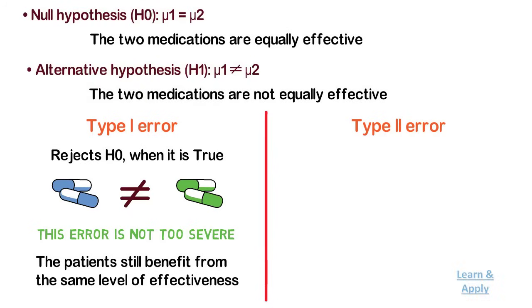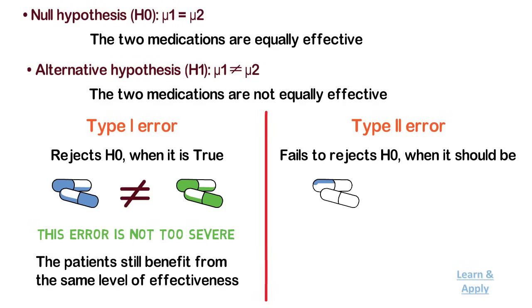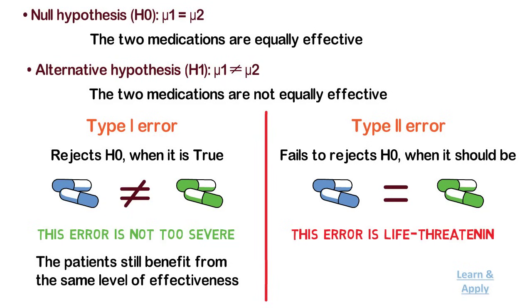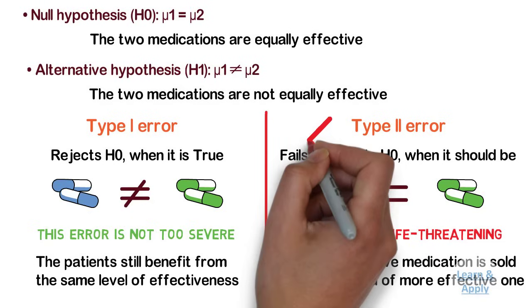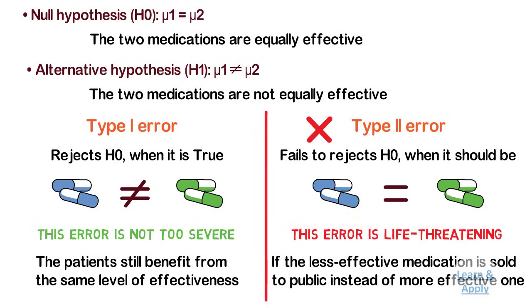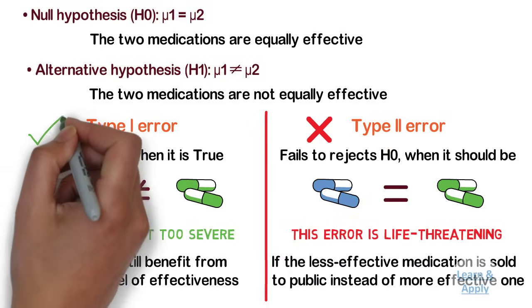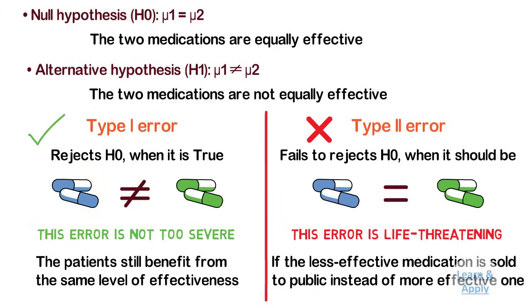However, if a type 2 error occurs, the researcher fails to reject the null hypothesis when it should be rejected — that is, the researcher concludes that the medications are the same when in fact they are different. This error is potentially life-threatening if the less effective medication is sold to the public instead of the more effective one. As you conduct your hypothesis test, consider the risk of making type 1 and type 2 errors. If the consequences of making one type of error are more severe or costly, choose a level of significance and a power of test that will reflect the relative severity of those consequences.